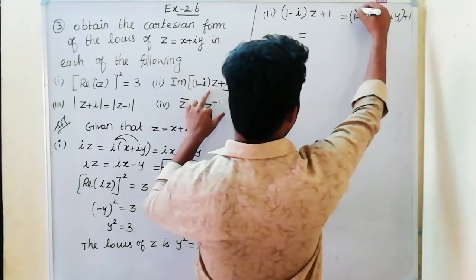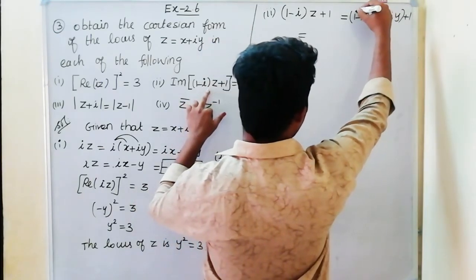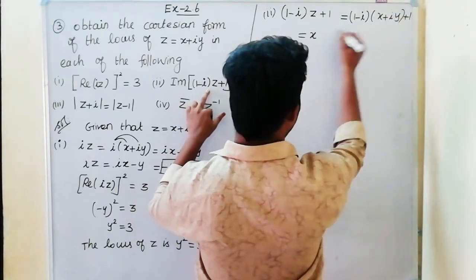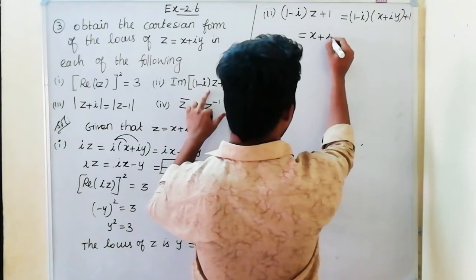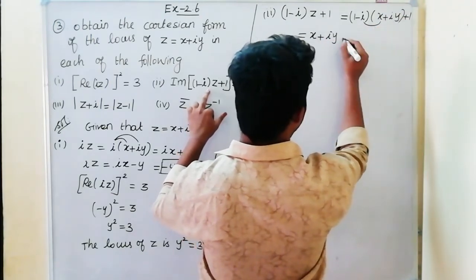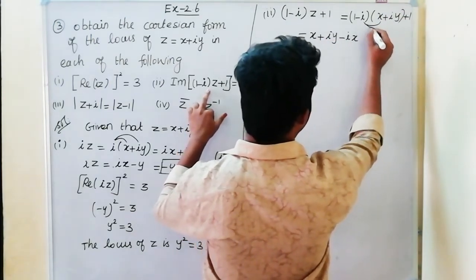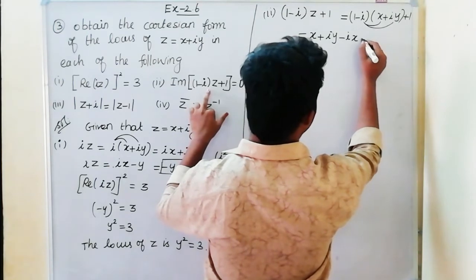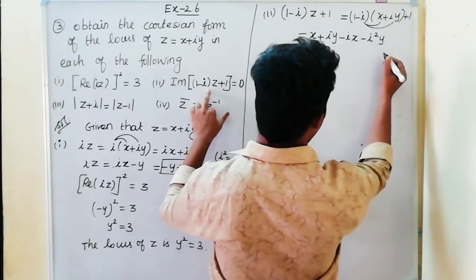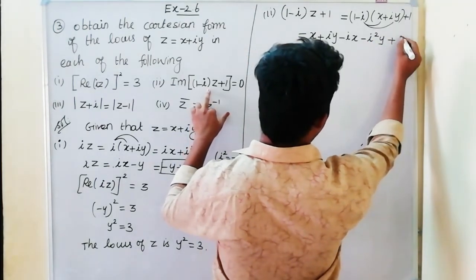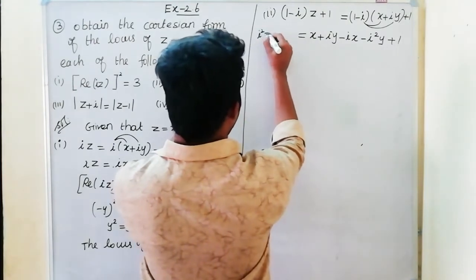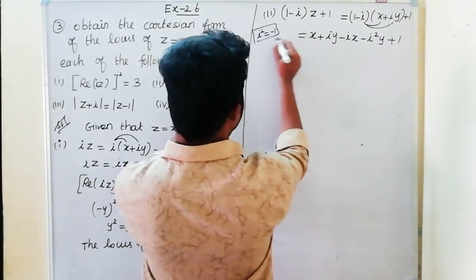Expanding the terms: 1 into x, plus 1 into iy, minus ix, minus i square y plus 1. Here i square equals minus 1, so substituting we get y minus ix.